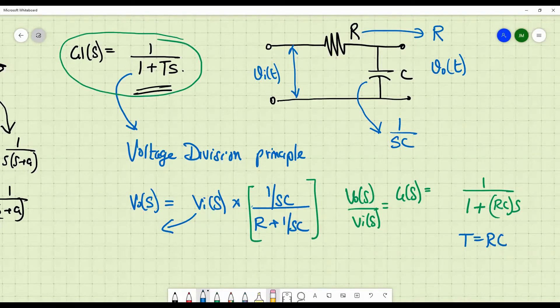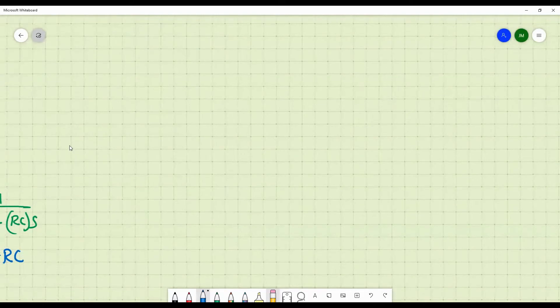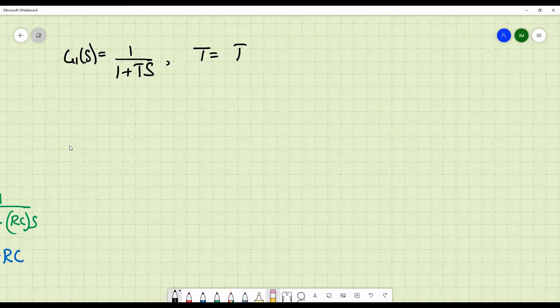What is this T called in first order systems? This T is nothing but the time constant of the system. Why is it called time constant? We will soon learn. So, G1 of S is equal to 1 by 1 plus TS, where T is the time constant of the system.